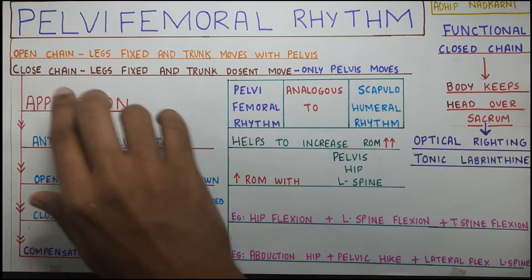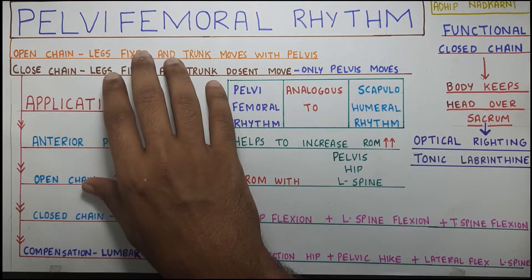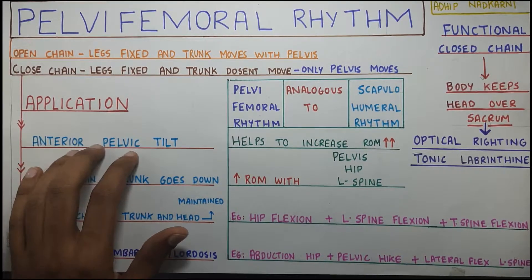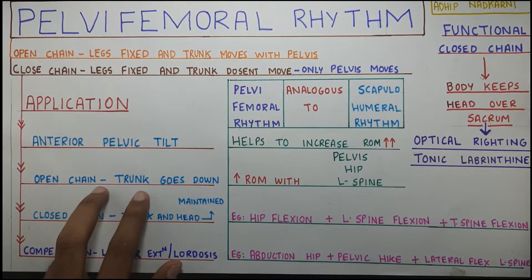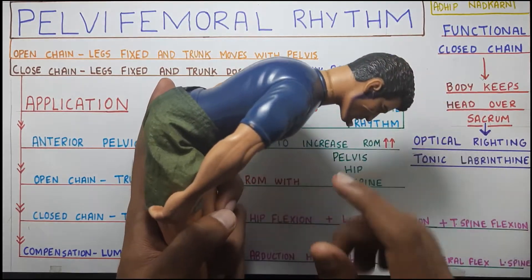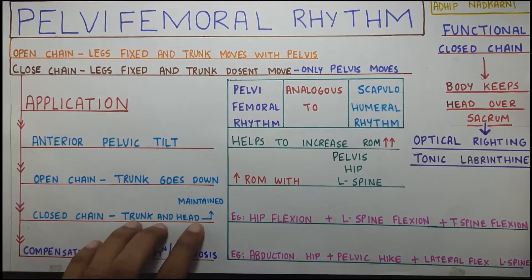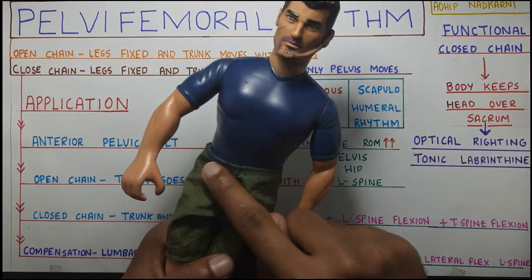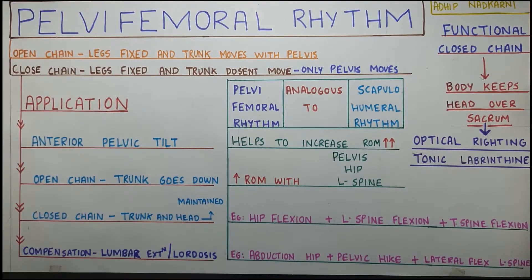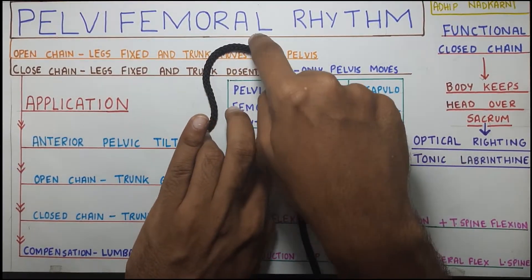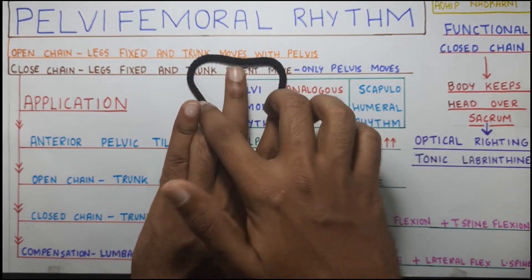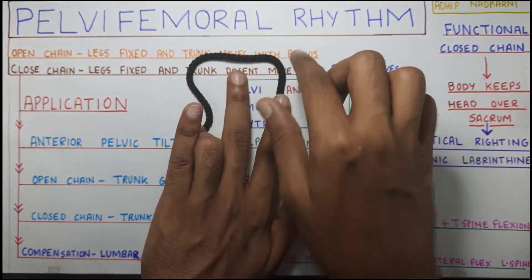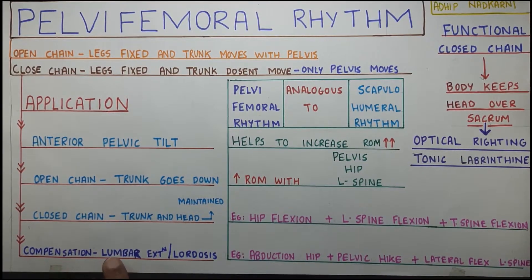Now let's look at a clinical application of closed kinematic chain. Anterior pelvic tilt can happen in two ways. One is open chain, where your trunk goes down - that we discussed. In closed chain, your trunk and head are maintained in the same position, but your pelvis goes for anterior tilt. Because both end parts are fixed, there has to be some compensation within the chain - and that compensation is at the lumbar spine, showing lumbar extension or lumbar lordosis along with the anterior pelvic tilt.